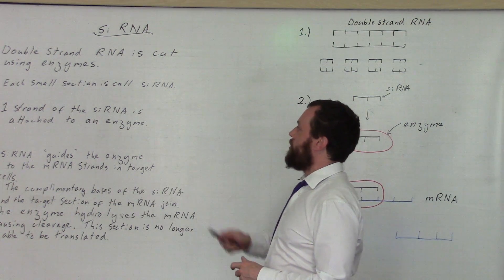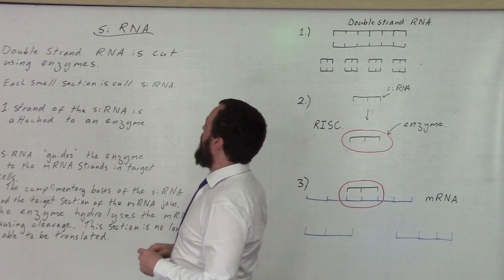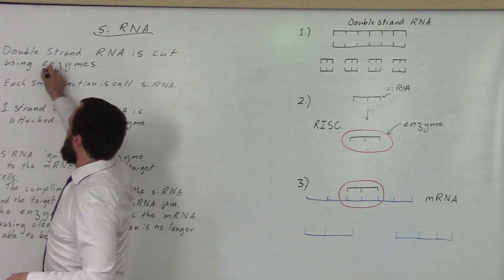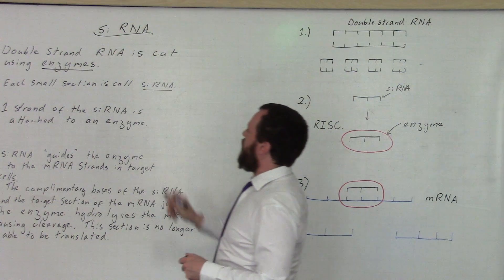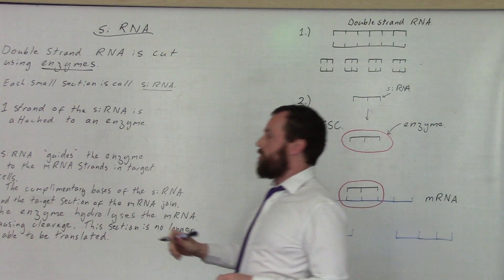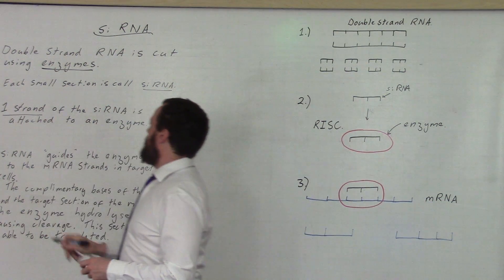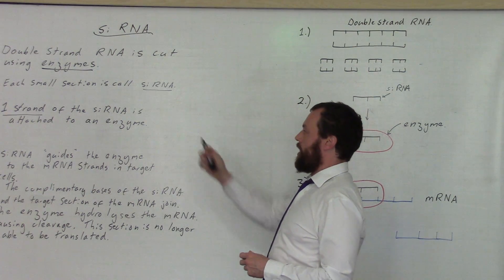So, if we look at some of the mark points, we see this double strand of RNA, which is cut using enzymes. Each one of these creates a small RNA. It's then important to understand that we only use one strand of that siRNA, and it's attached to this enzyme.